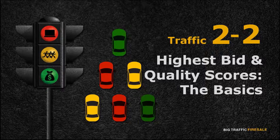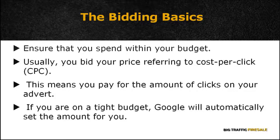Welcome back. In this module you'll learn two major components that determine the success of your adverts: the highest bid and quality score. Now let's understand the basics of bidding. When starting out with your AdWords campaigns, you want to ensure that you spend within your budget. For starters, it's common to bid your price referring to cost per click, or CPC. CPC simply means that you pay for the amount of clicks on your advert.